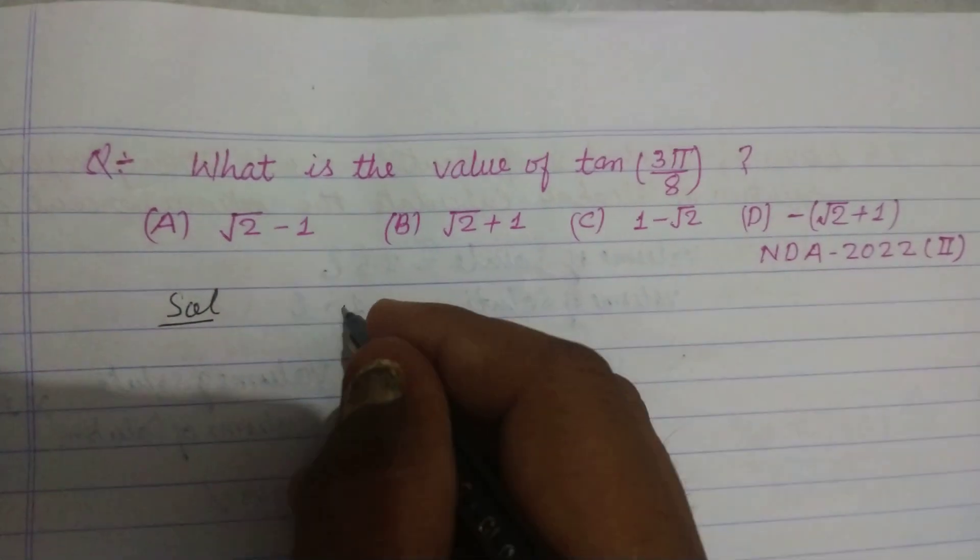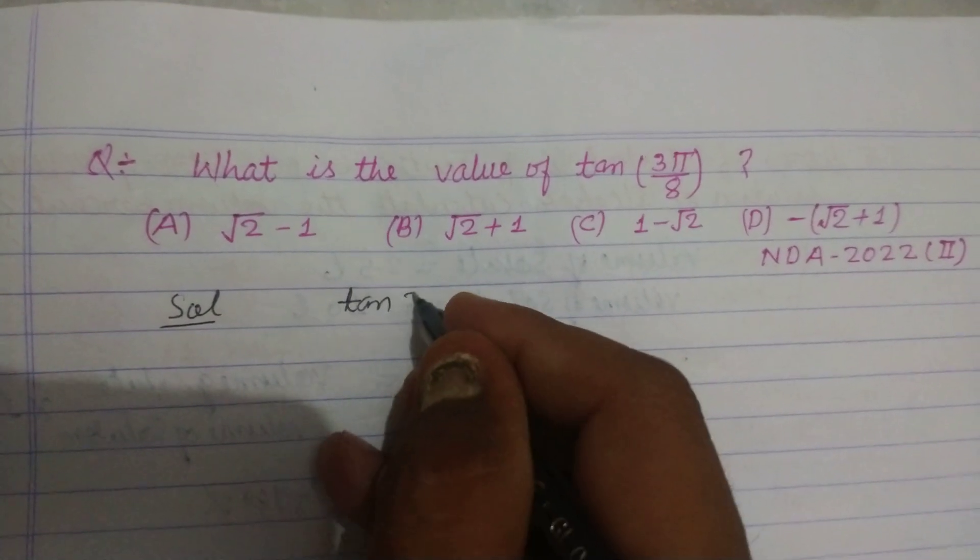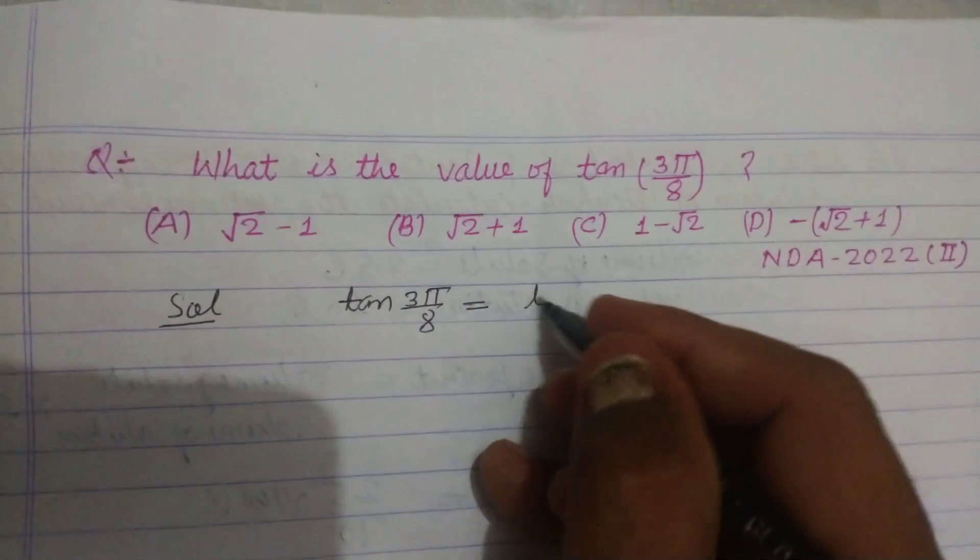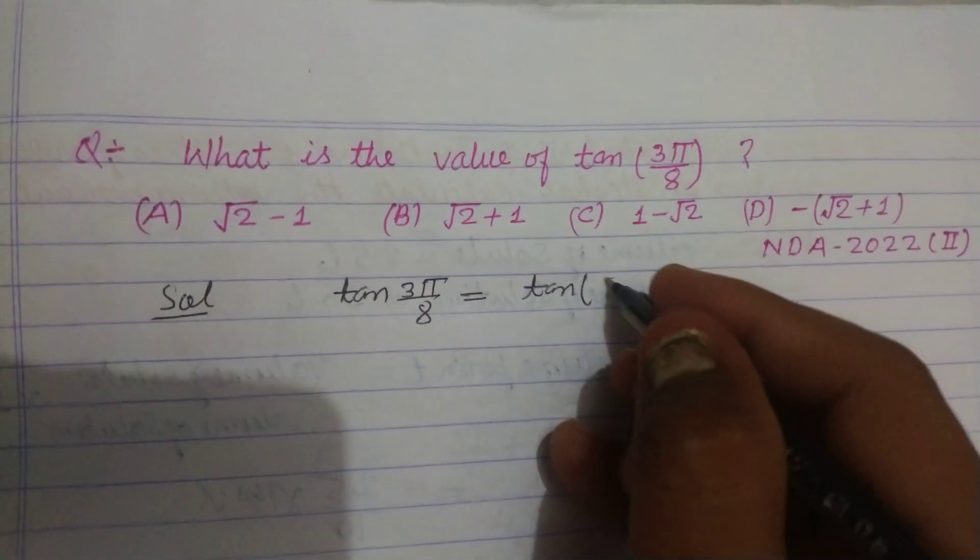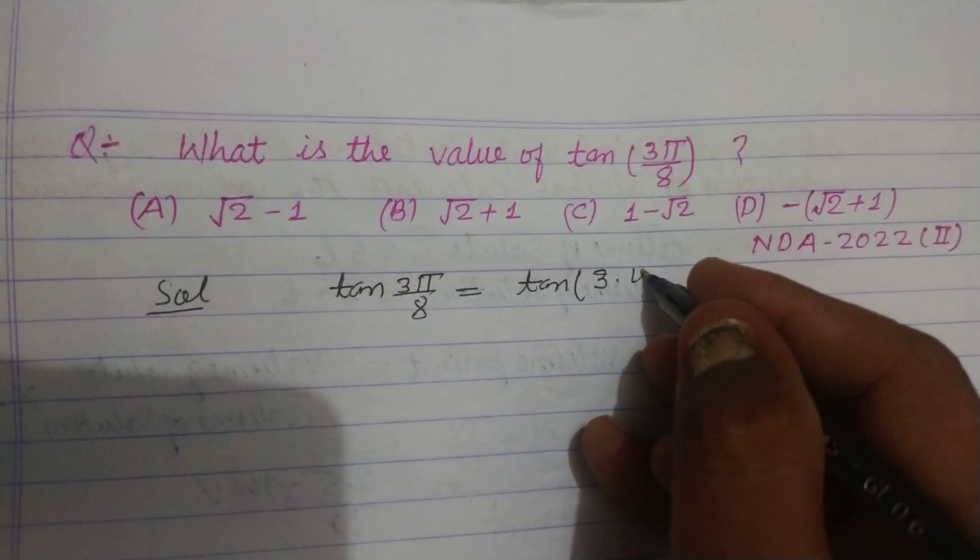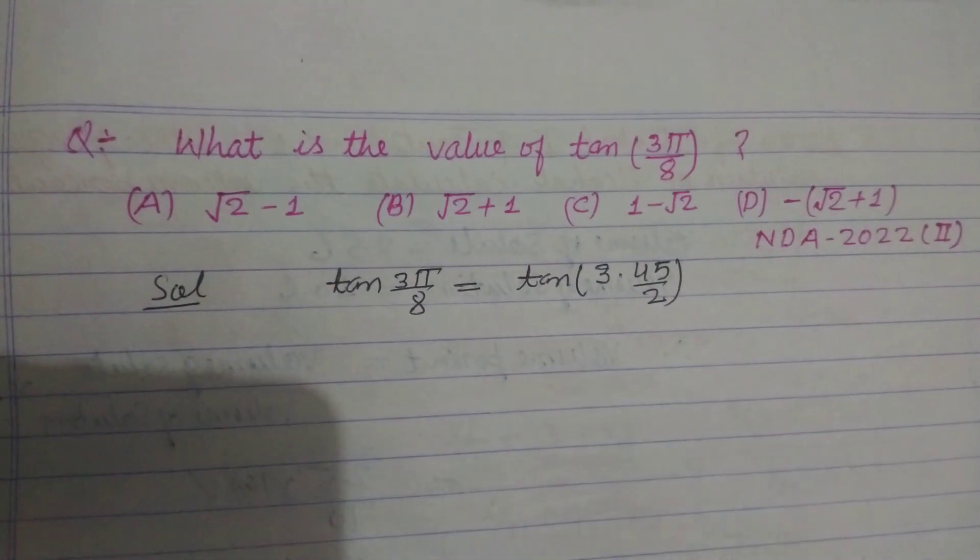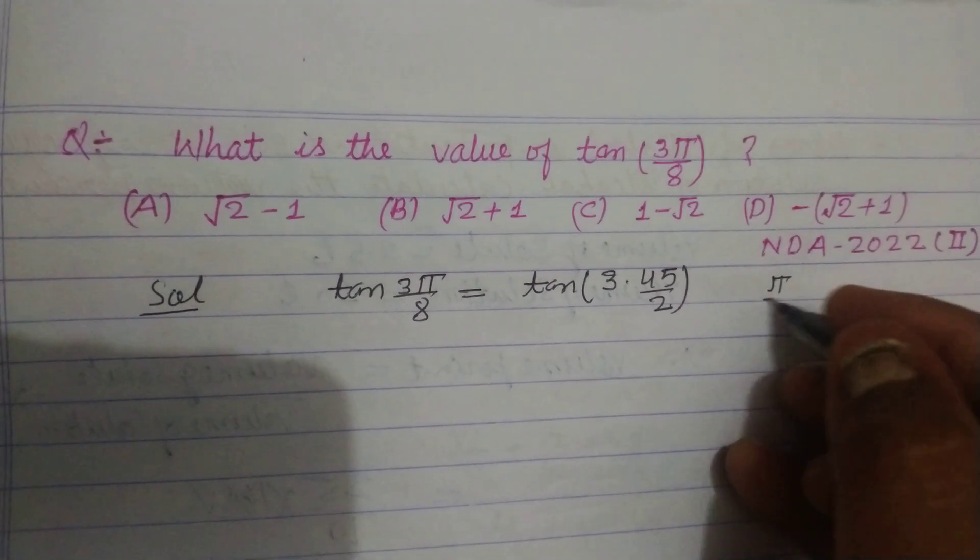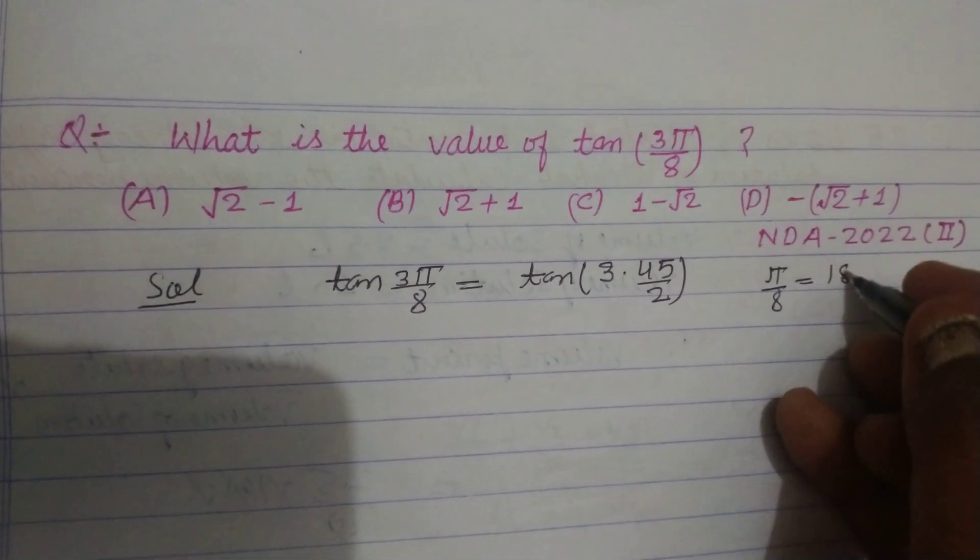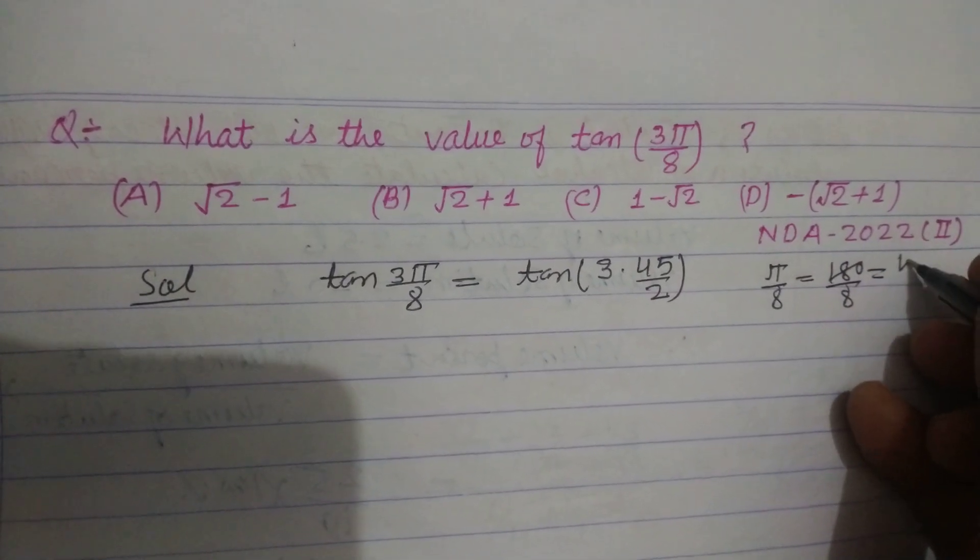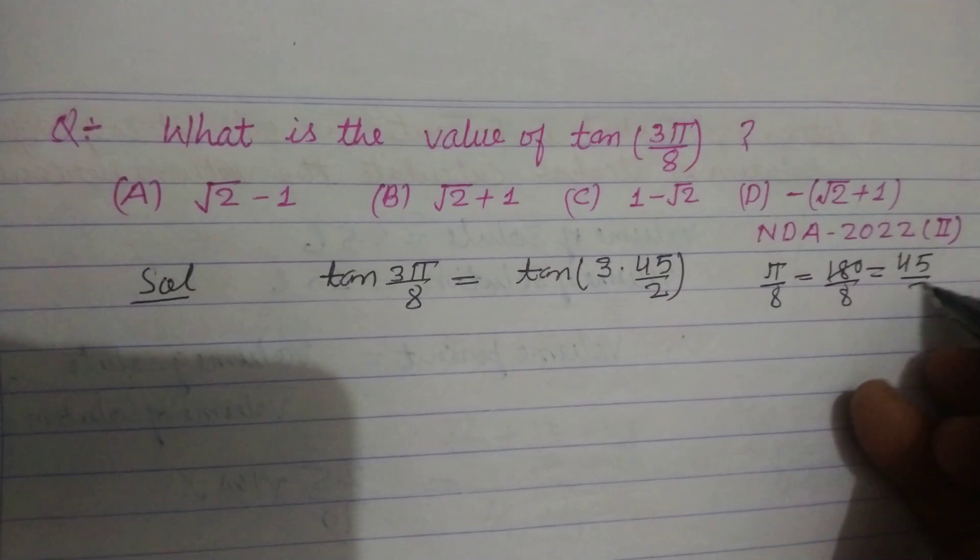So students, first we write tan(3π/8). This can be written as tan(3×45°/2), since π radians equals 180°, so π/8 equals 180°/8, which divided by 4 is 45°/2.